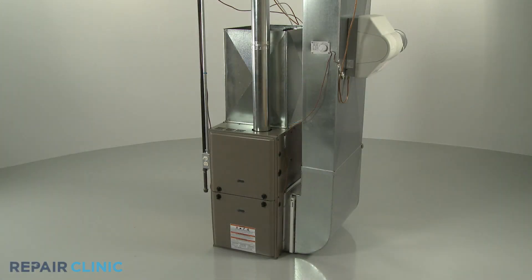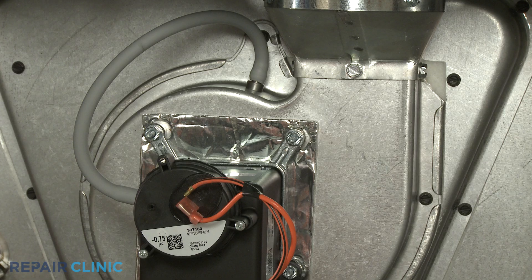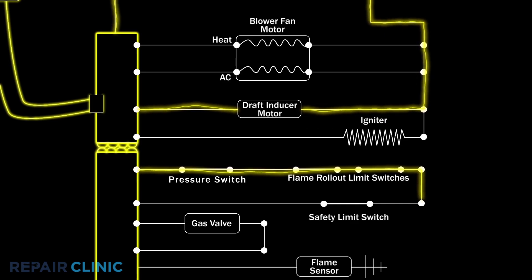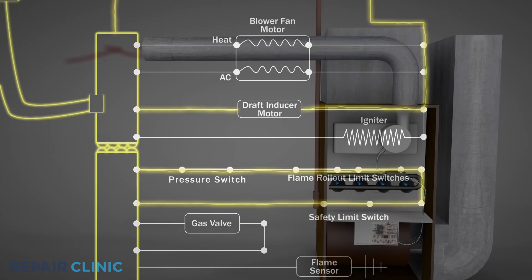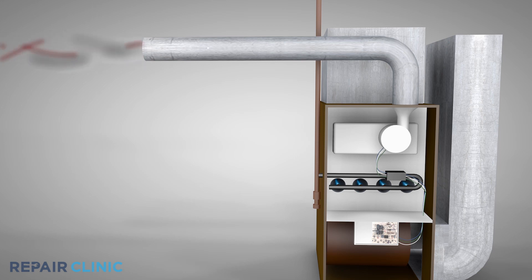If a furnace is not heating, or it continually starts then stops, the pressure switch could be malfunctioning. As part of the furnace's ignition system, the pressure switch will close once the draft inducer fan motor reaches its maximum speed. This is a safety precaution to ensure that gas will not enter the furnace unless the toxic fumes within the burner assembly can be exhausted.